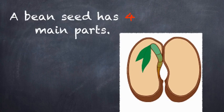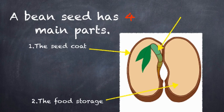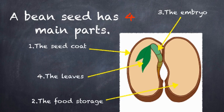A bean seed has four main parts. The seed coat, the food storage, the embryo or baby plant, and the leaves.